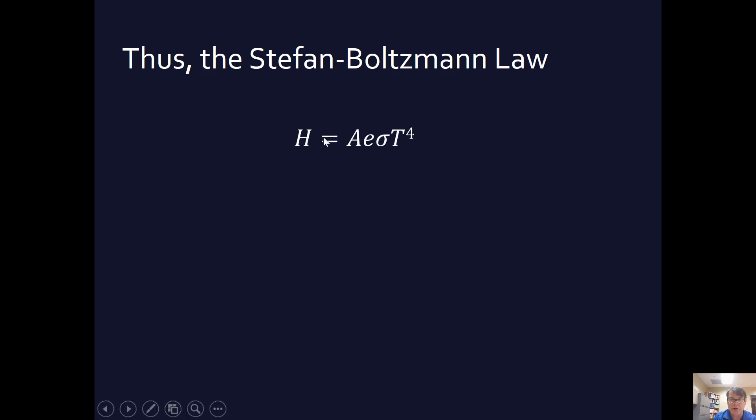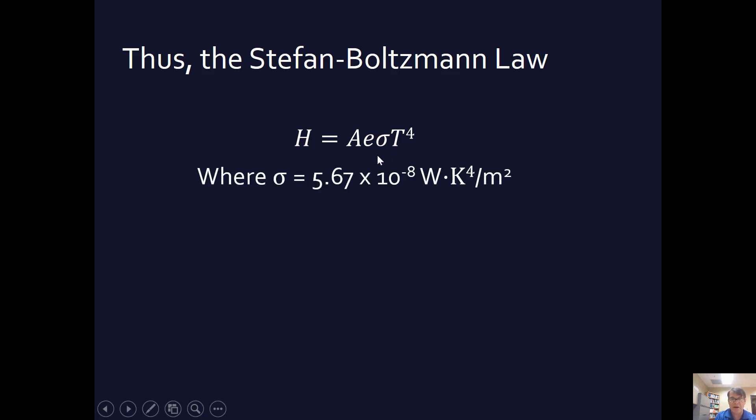And the winner is the Stefan-Boltzmann law, which is exactly as we've said. The heat flow is going to equal the surface area times the emissivity times the Stefan-Boltzmann constant, which, by the way, is 5.67 times 10 to the negative 8 watts per meter squared times Kelvin to the fourth, times the Stefan-Boltzmann constant times the temperature in Kelvins to the fourth power. So there you have it.